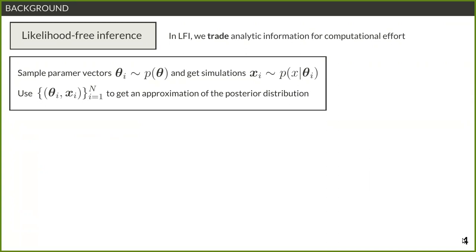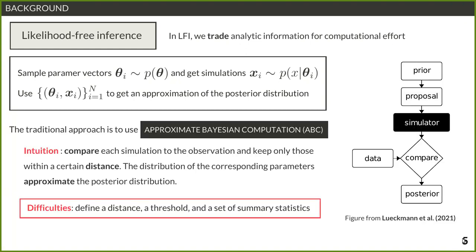In likelihood-free inference (LFI), also called simulation-based inference, the idea is to bypass the difficulty of writing the likelihood of a complex non-linear model such as those in neuroscience. What we do is sample several parameter vectors from a prior, simulate a new observation x_i for each theta_i, and from this dataset approximate the posterior distribution. The traditional way would be ABC — and we do compare against it in the paper — but the approach we were interested in is based on normalizing flows.